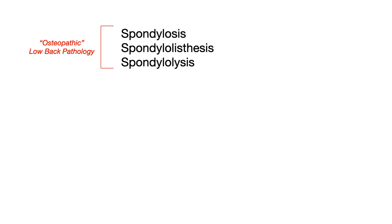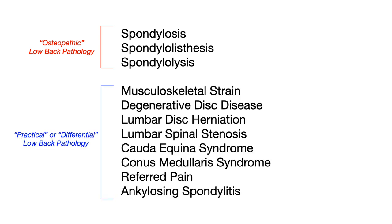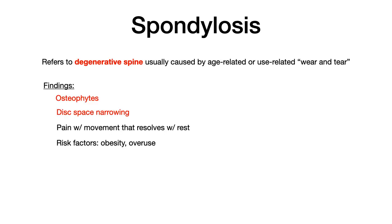We're going to differentiate and talk about those three conditions first, then discuss the other conditions that form the more practical differential for low back pathology. Let's begin by differentiating spondylolysis, spondylosis, and spondylolisthesis — these are very high yield on COMLEX. We'll start with spondylosis, which refers to degenerative spine usually caused by age-related or use-related wear and tear.